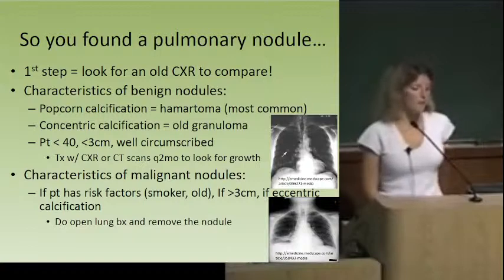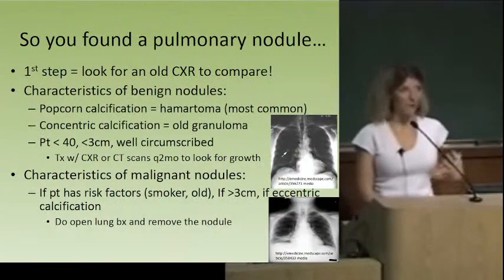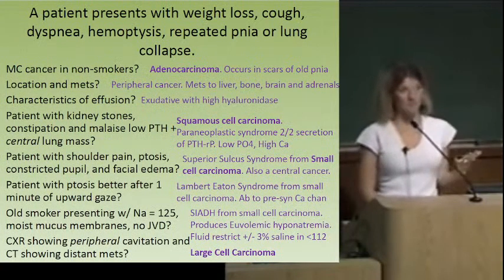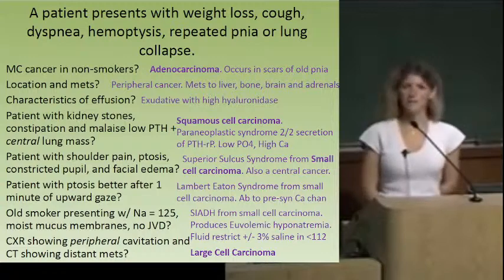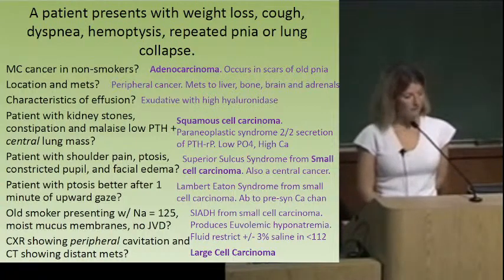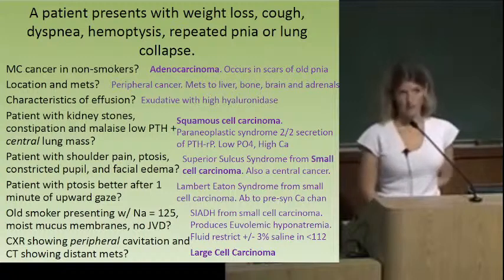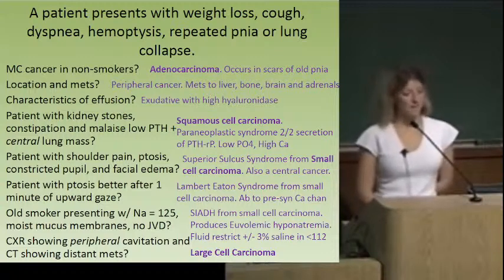Scary lung cancer symptoms: weight loss, cough, dyspnea, hemoptysis, or recurrent pneumonia in the same lobe. There are four cancer types to know. Most common in non-smoking patients is adenocarcinoma — peripheral, can occur in scars of old pneumonia. Metastasizes to liver, bone, brain, and adrenal glands. Adenocarcinoma also gives a characteristic exudative pleural effusion with high hyaluronidase.